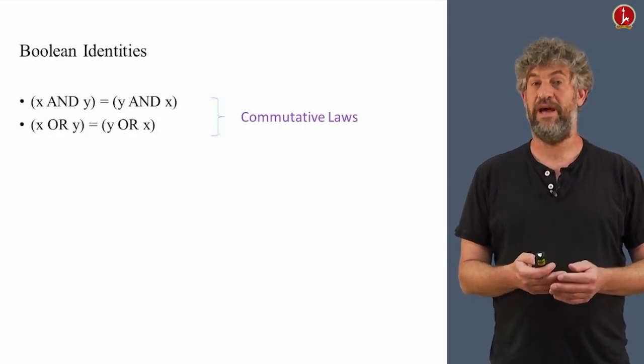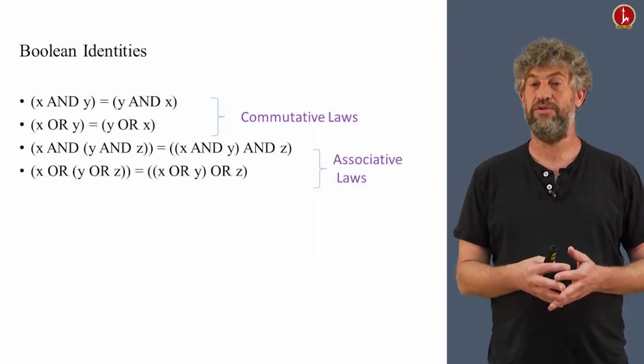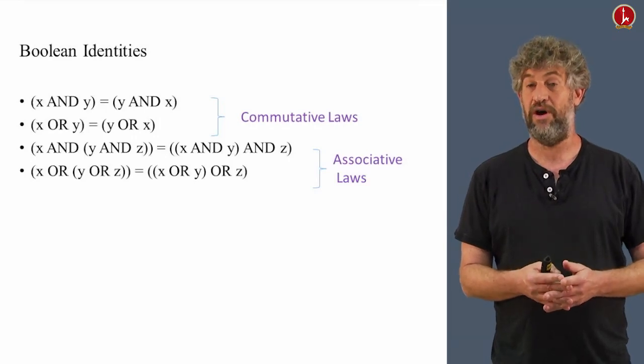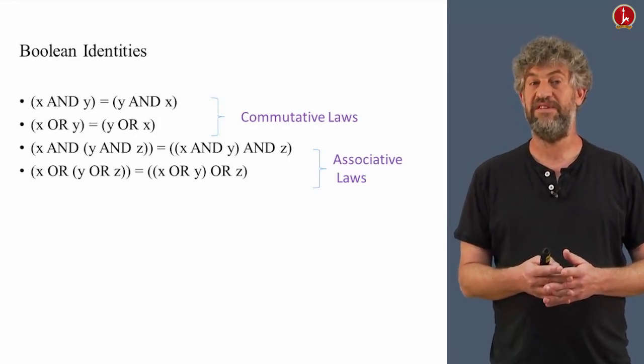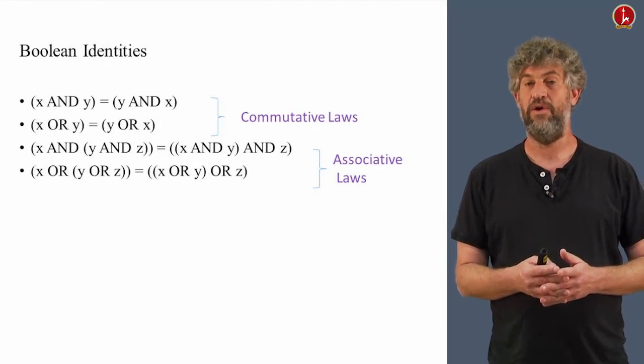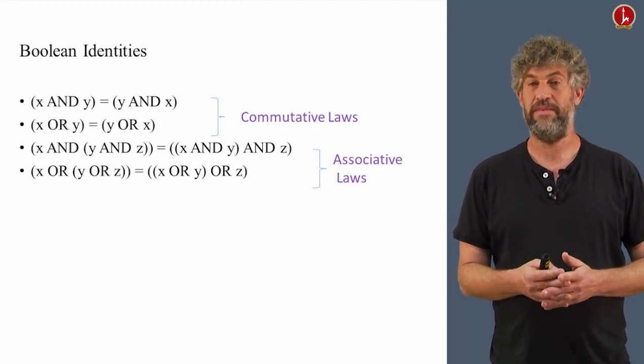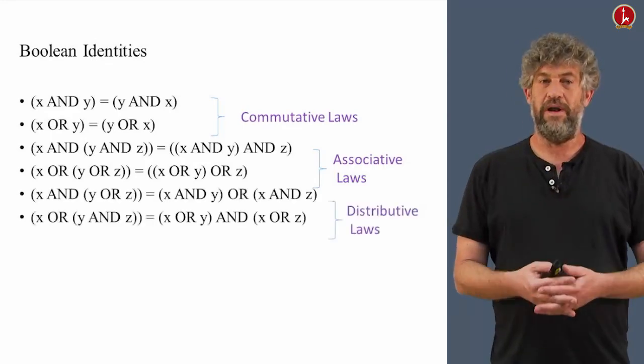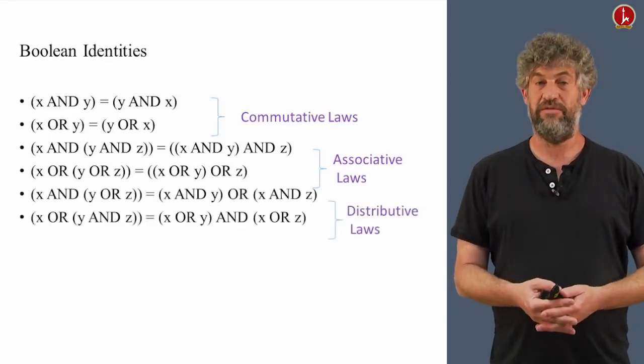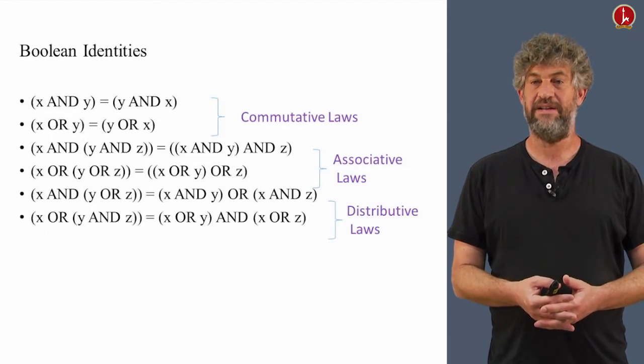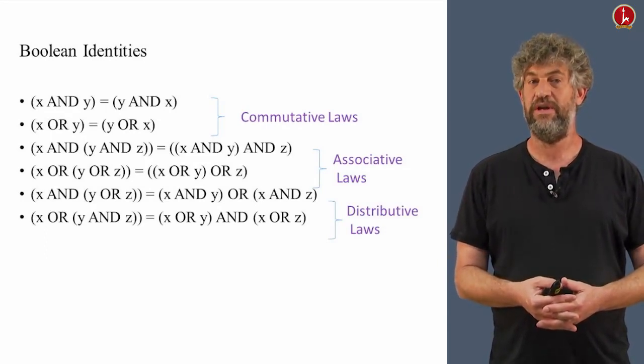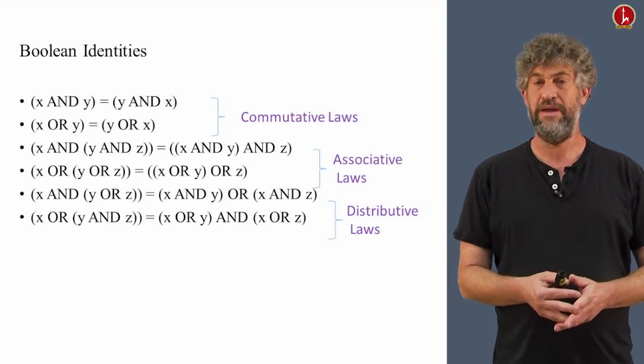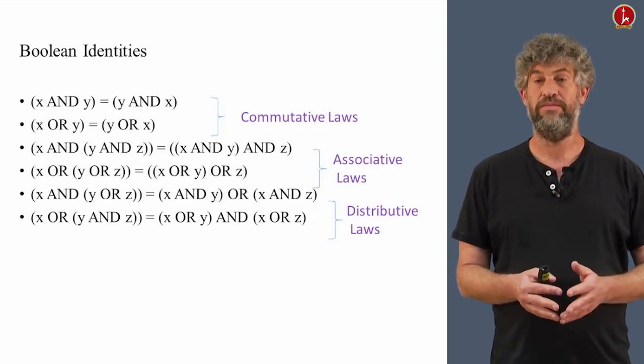There are a bunch of other kinds of identities. For example, the well-known associative law. If you have x AND (y AND z), it's the same thing if you first do x AND y, or whether you first do y AND z. Similar thing happens for OR. Another well-known law is the distributive law. If you have x AND (y OR z), that turns out to be exactly equal to (x AND y) OR (x AND z).